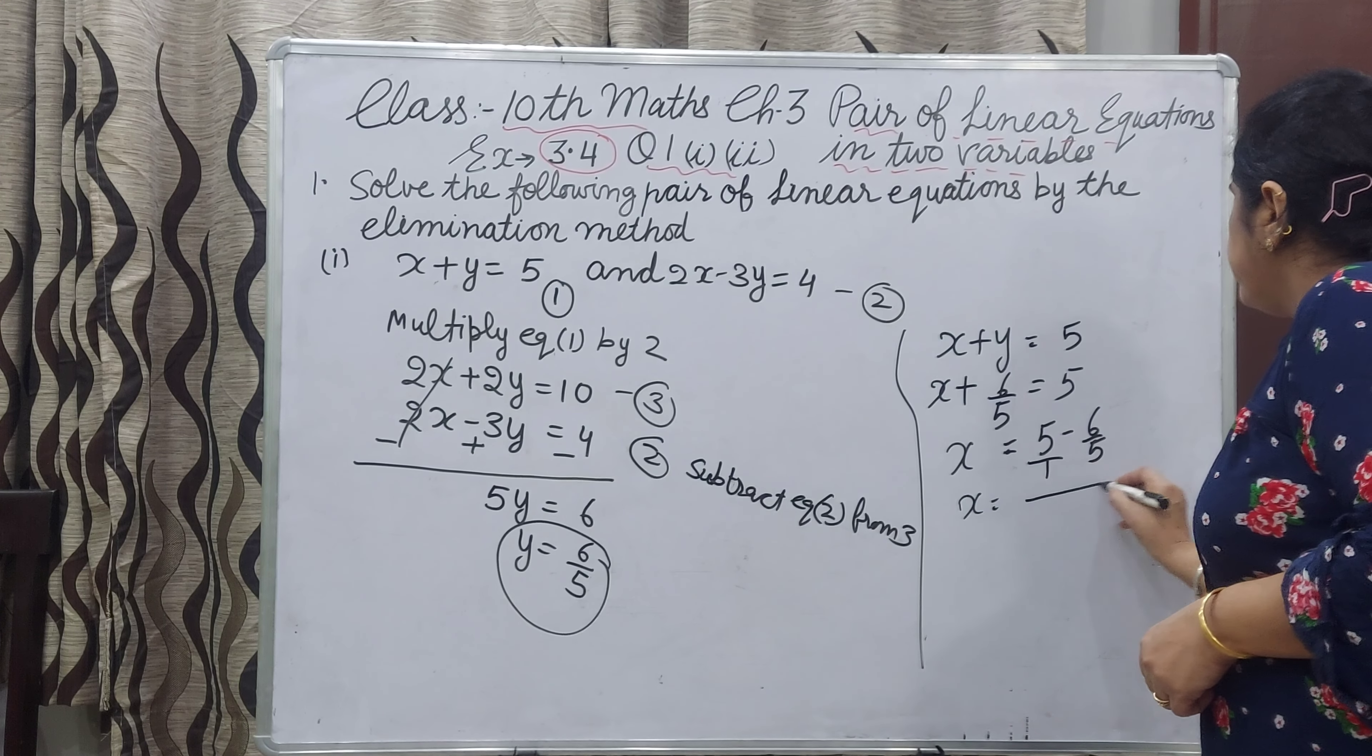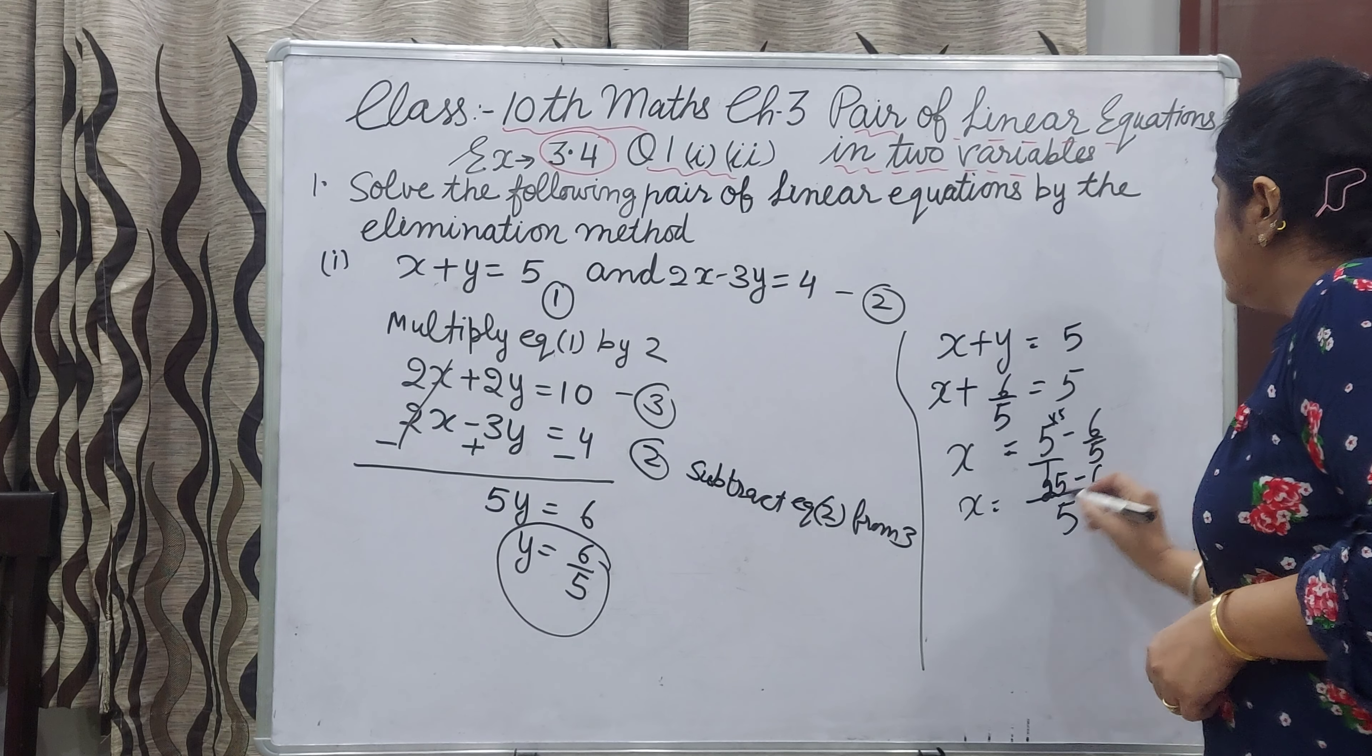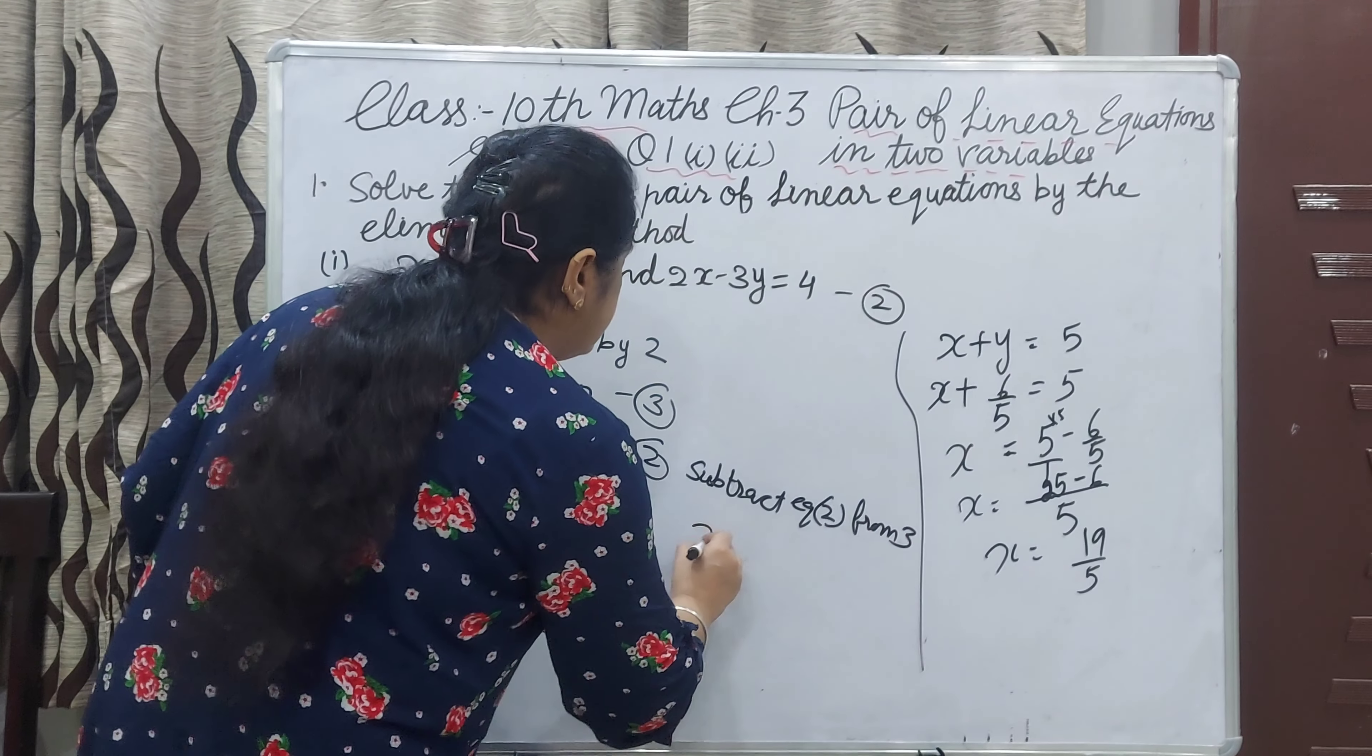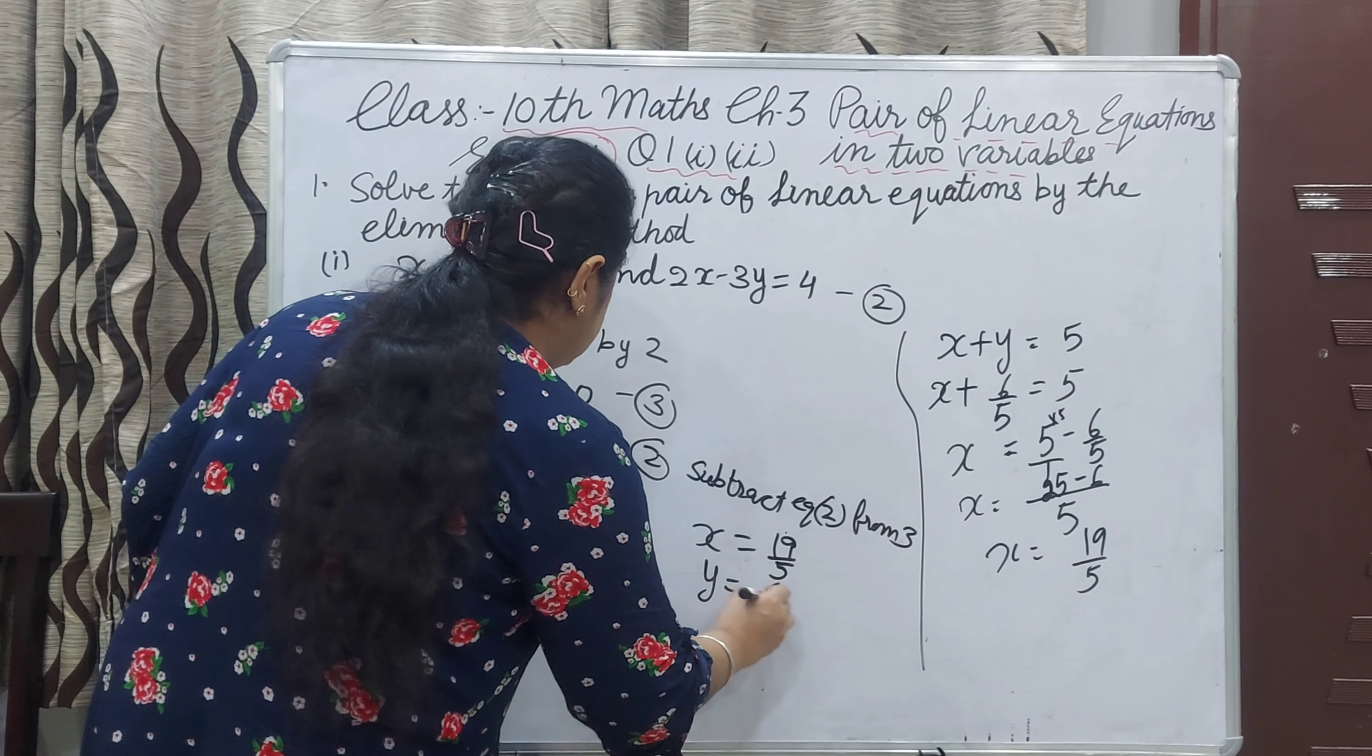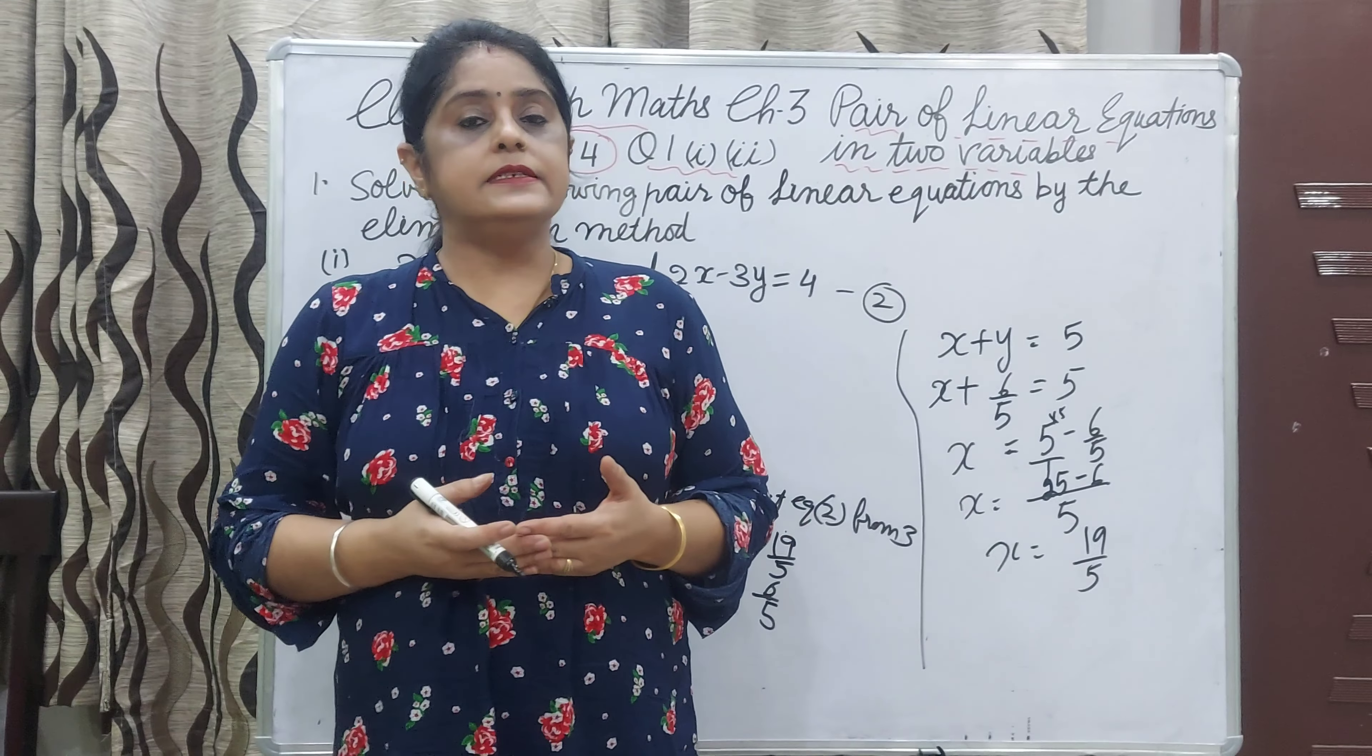5 divided by 1, 5 and 5 multiply the numerator: 25. 25 minus 6, x value you will get 19 upon 5. Now your answer is x is 19 by 5 and y is 6 upon 5. If you want to use substitution method, you can see the video of exercise 3.3. Now I will explain second part.